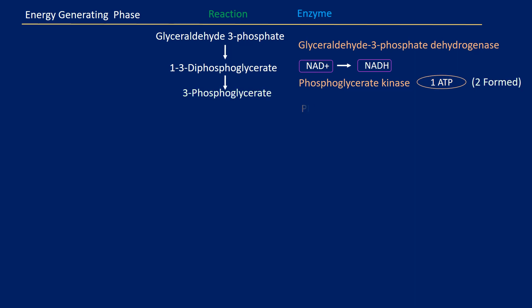After that, the enzyme phosphoglycerate mutase turns 3-phosphoglycerate into 2-phosphoglycerate, and then the enzyme enolase turns 2-phosphoglycerate into phosphoenolpyruvate.